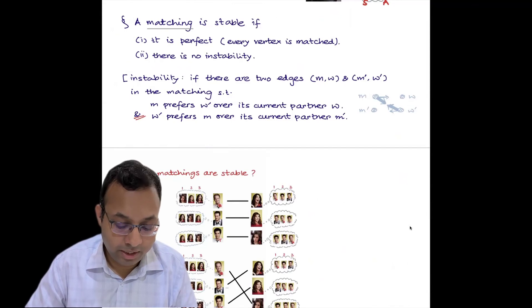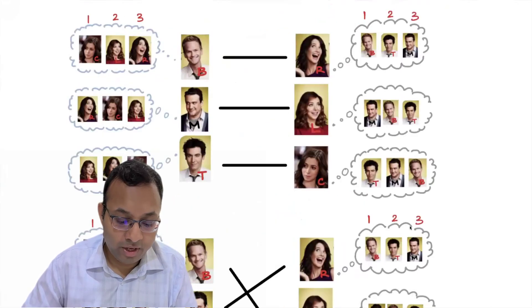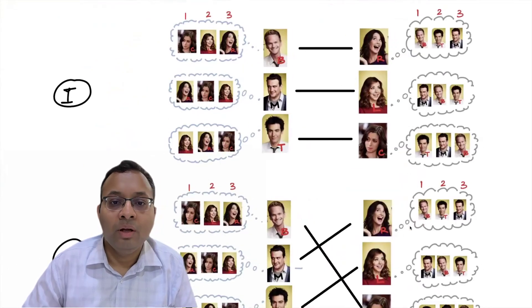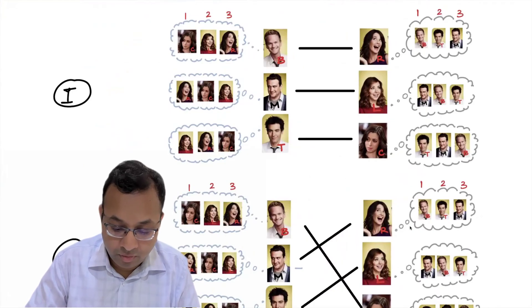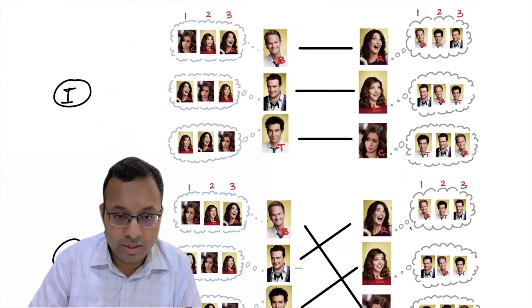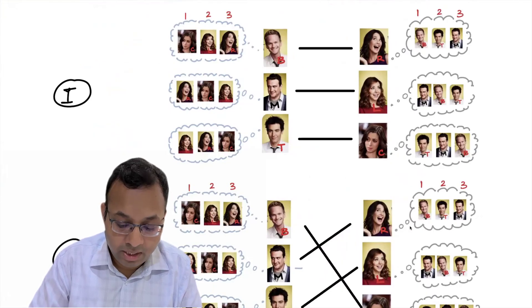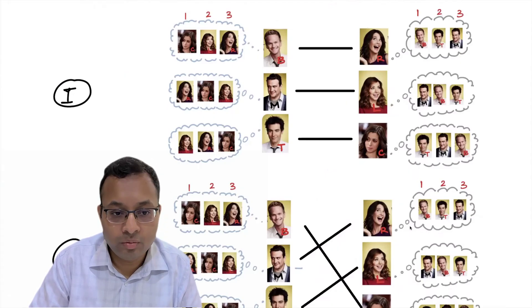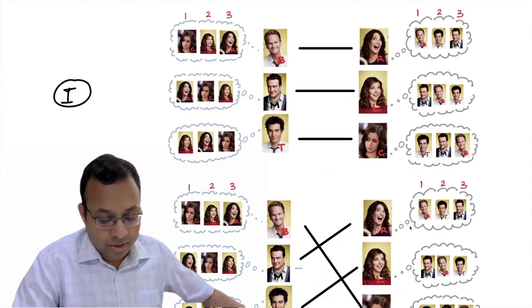Now let's check which matchings are stable using our example. Consider the assignment where Bernie is matched with Robin, Marshall with Lily, and Ted with Christian. In this matching, all the women are getting their top preferences: Robin gets her top preference Bernie, Lily gets her top preference Marshall, and Christian gets her top preference Ted. So there is no reason for any of these women to deviate and form another partnership. This is a stable matching.